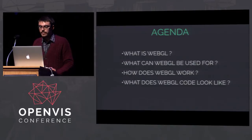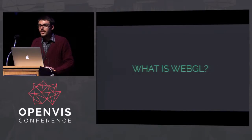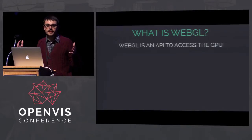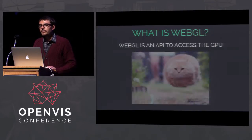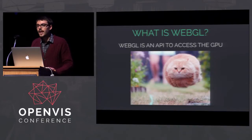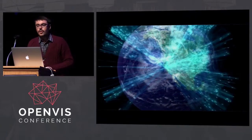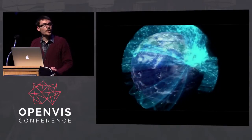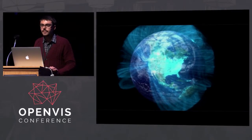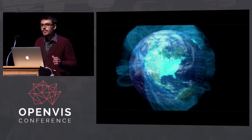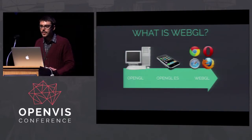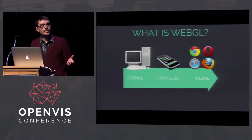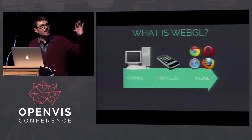So this is the agenda. Hopefully you won't get lost around the third to fourth point. WebGL is just a JavaScript API to access the GPU, and the GPU is pretty fast. This is one example I built at Twitter showing 800,000 retweets for Obama's 'four more years' tweet, which reached millions of viewers. This sort of thing you can build with WebGL pretty easily.